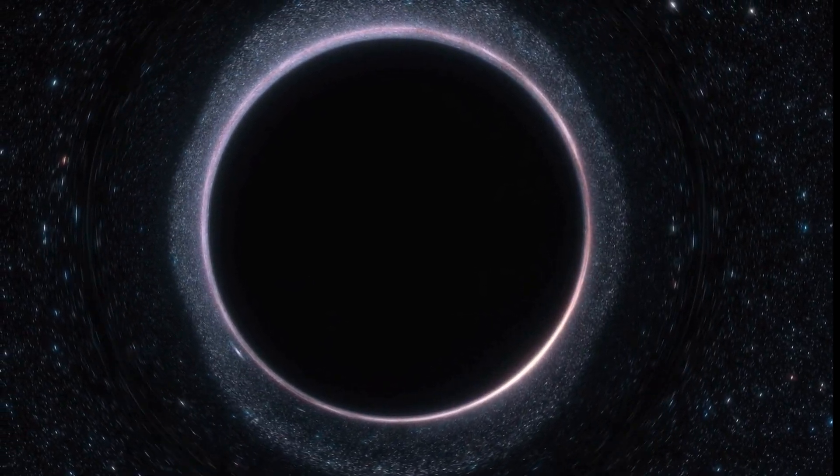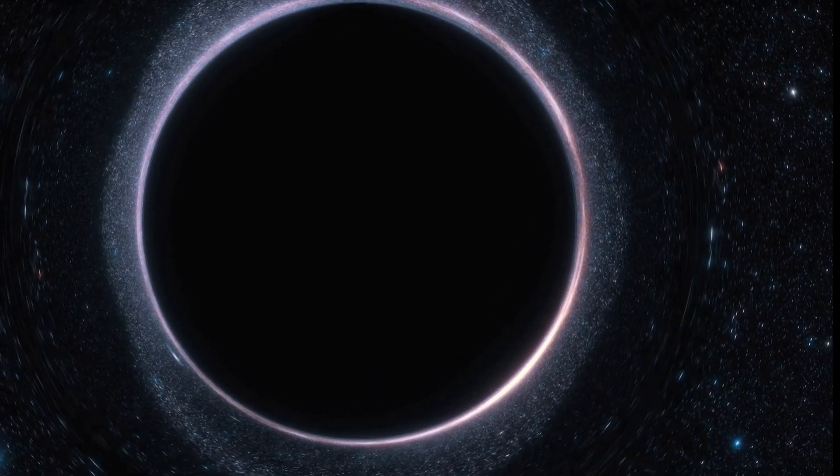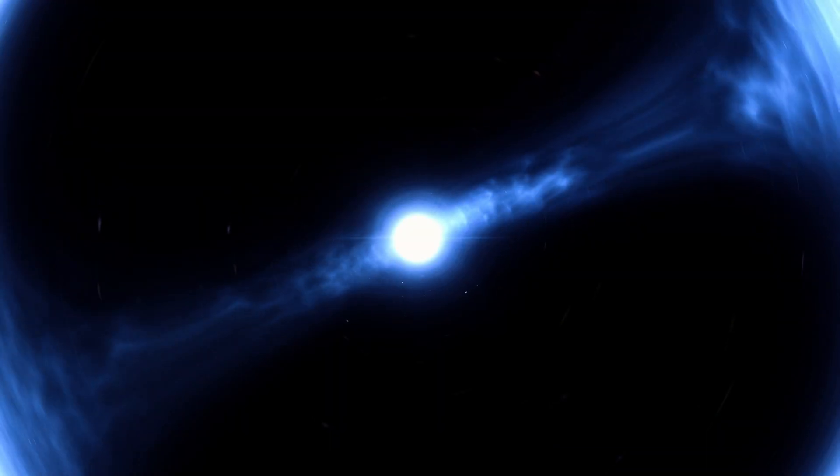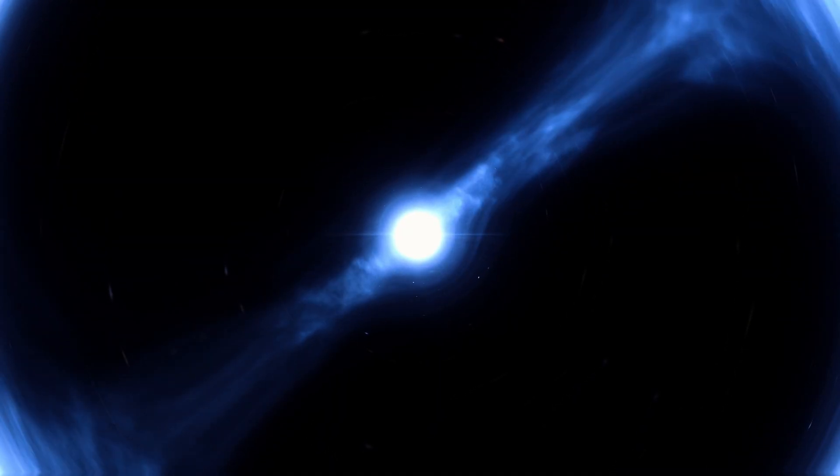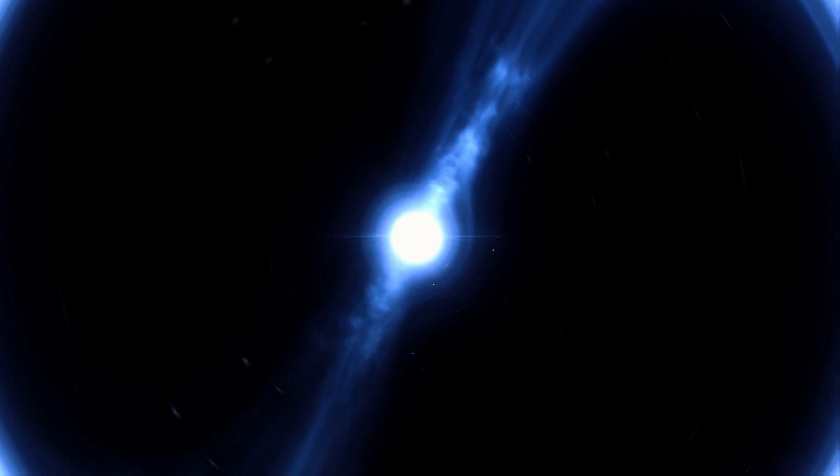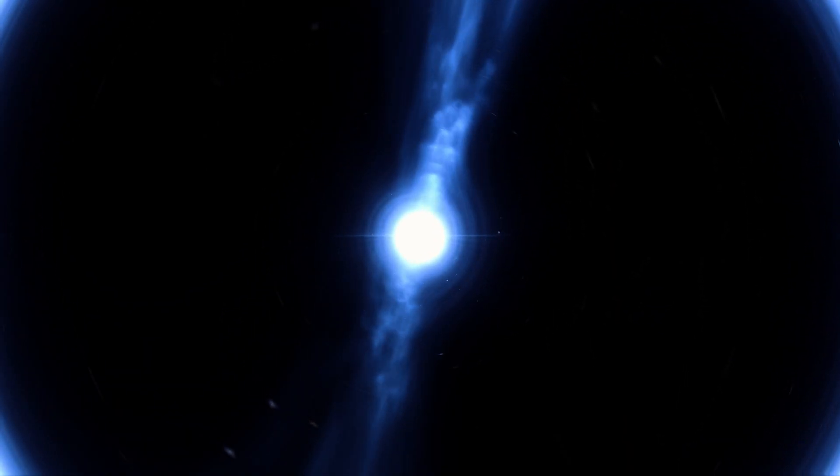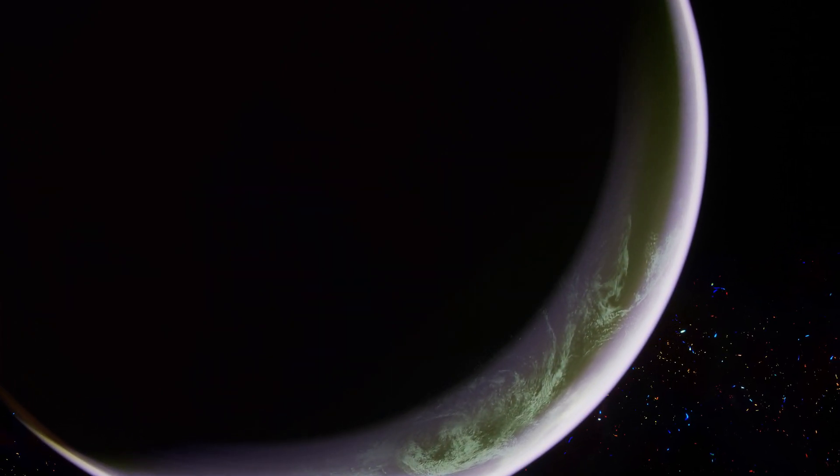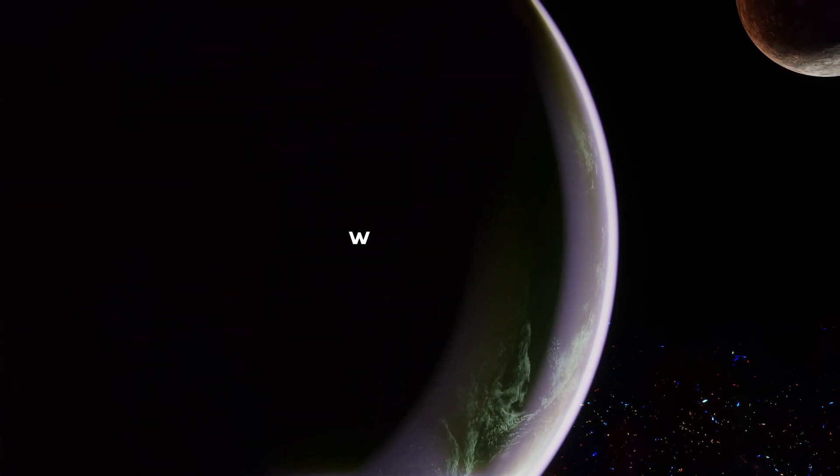Stars with masses in the range of about 2 to 20 times that of the Sun may end up as neutron stars or black holes, depending on various factors including their mass loss during their evolution and their rotation rates. Stars with masses lower than about 2 times that of the Sun usually don't have enough mass to form black holes, and they might end their lives as white dwarfs.